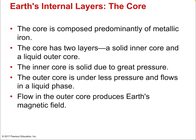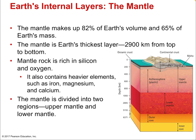The core is composed predominantly of metallic iron. The inner core is solid due to the great pressure — it's a battle between pressure and temperature, and pressure wins. The outer core is under less pressure, so the temperature wins and it flows as a liquid. Flow in the outer core produces Earth's magnetic field, essentially acting as a giant dynamo. As the Earth rotates, ions in the churning liquid outer core spin in a circle, creating a circular current, which — as we know from electromagnetic induction — creates a magnetic field. Without a liquid outer core, Earth would likely have no strong magnetic field.